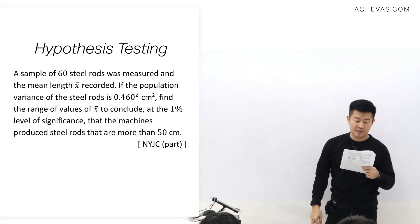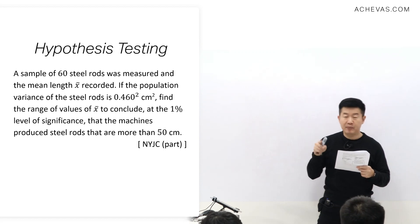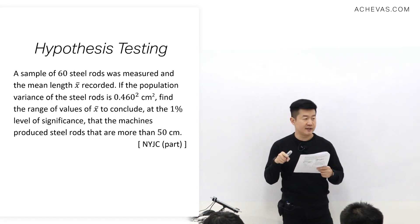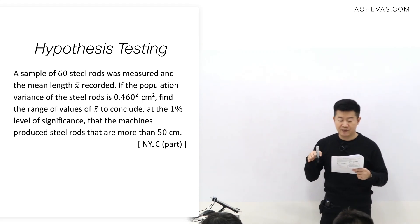A sample of 60 steel rods was measured and the mean length X-bar is recorded. If the population variance is 0.460 squared, the population variance is given. Find the range of values of X-bar.